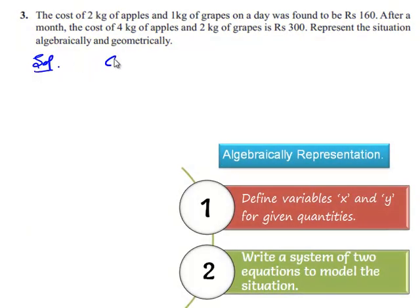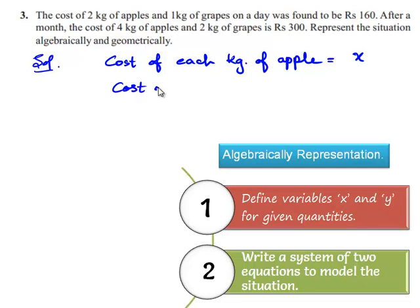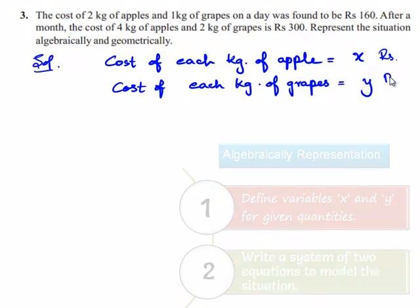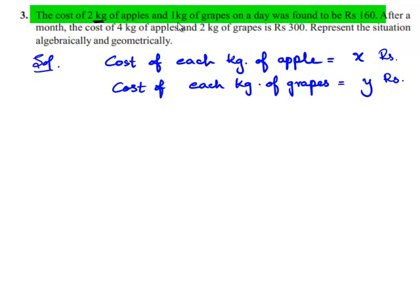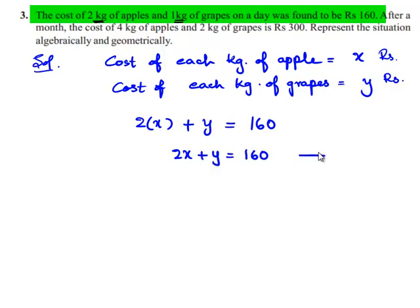Let us assume the cost of each kg of apple is equal to x rupees and the cost of each kg of grapes is equal to y rupees. Now, according to the first condition, the cost of 2 kg of apples and 1 kg of grapes is 160 rupees. So the cost of 2 kg of apples is 2x and the cost of 1 kg of grapes is y. The total cost is 160 rupees, so this becomes 2x + y = 160. This is equation number 1.